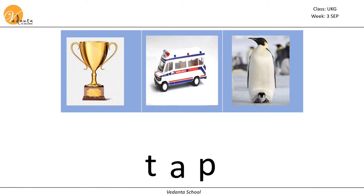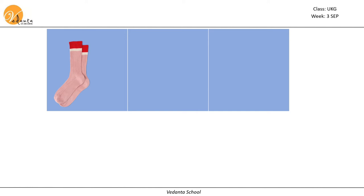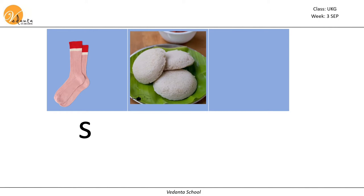Here comes the picture: socks. What is the beginning sound for socks? S — socks. The next picture: idli. Idli starts with the i sound. And next one: pants. P — pants starts with the p sound.